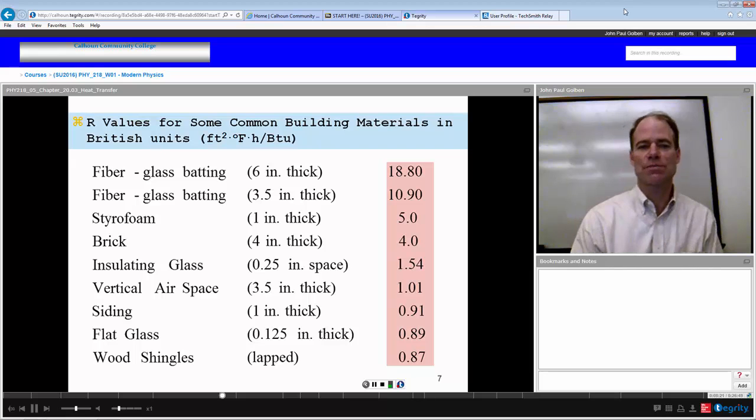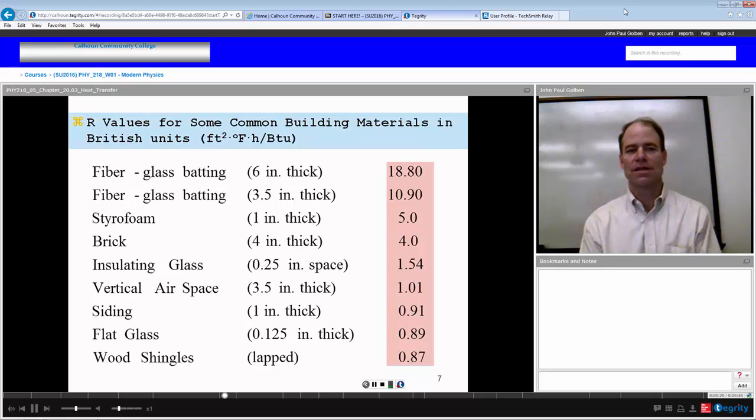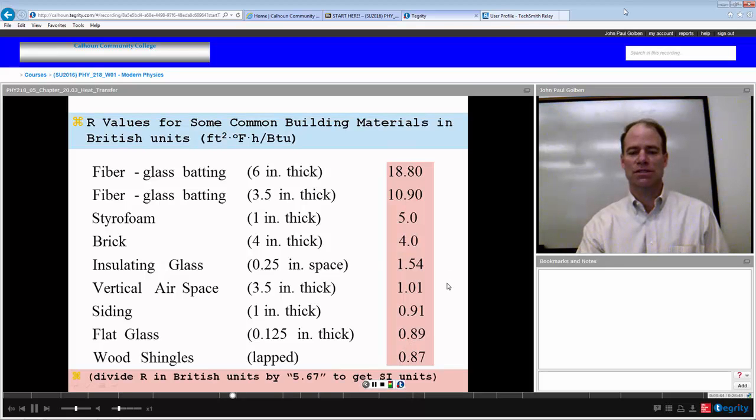Here are some R values for some common materials. Fiberglass batting, 6 inches thick, 18.8. 3.5 inches thick, 10.9. Styrofoam, 5. Brick, 4. Insulating glass, 1.5. You get the idea. But you would divide each of these R values in the British system by 5.67 to get the corresponding value of R in the SI system.